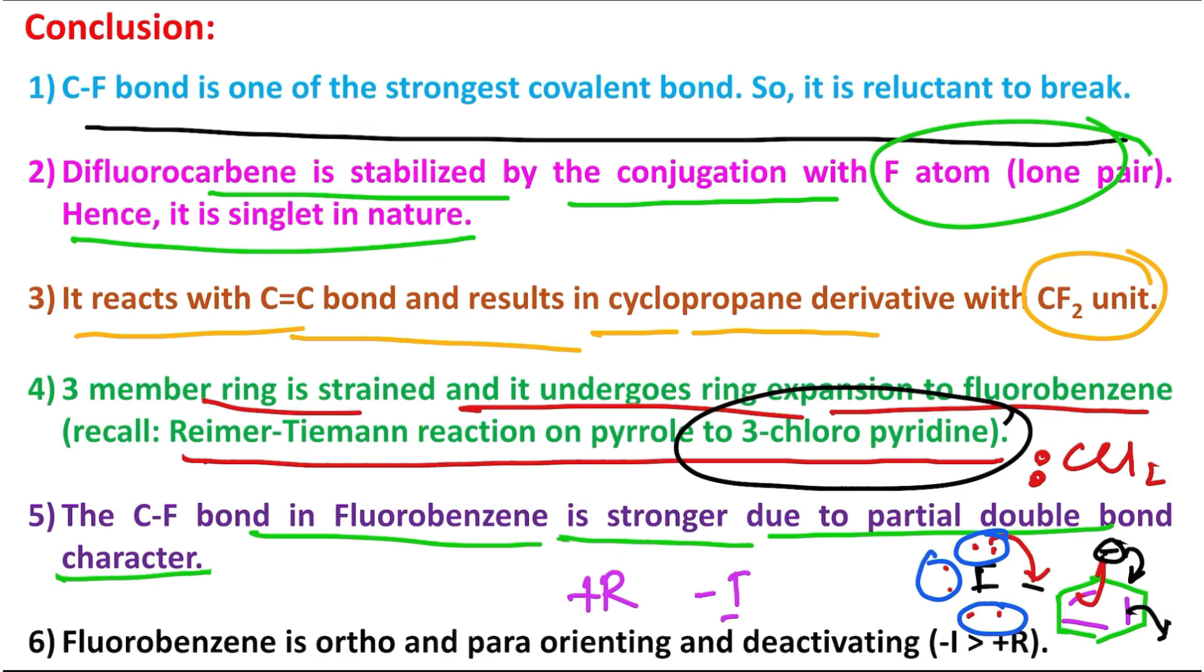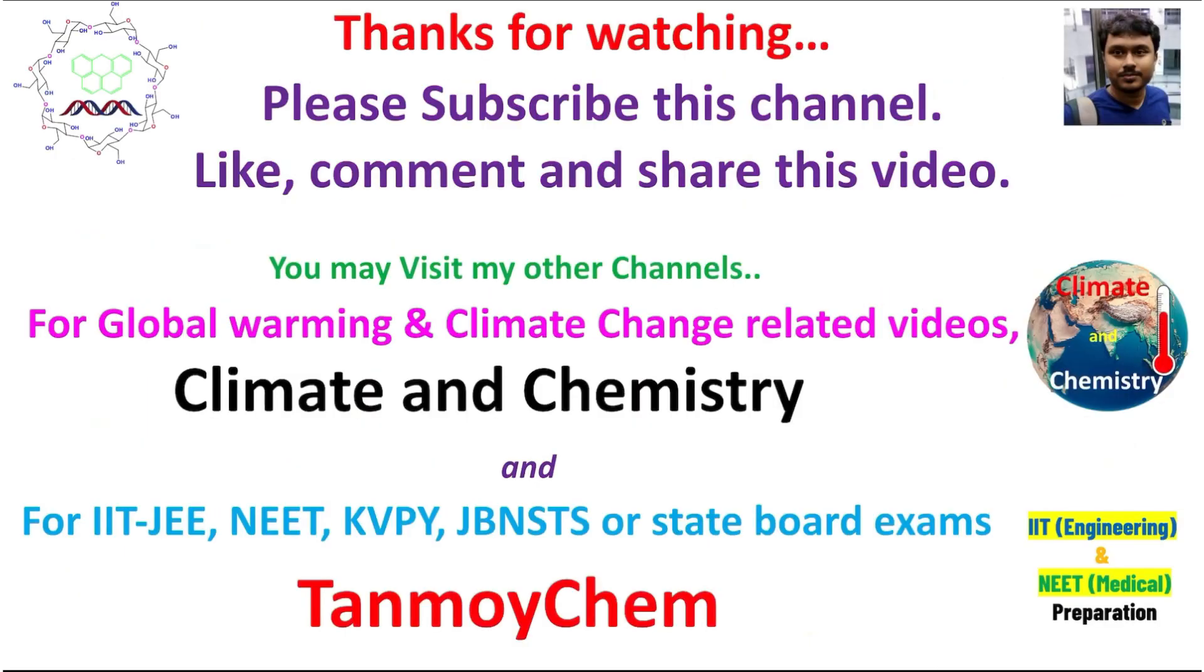And in this context, this is an exceptional case where -I is greater than +R. So fluorobenzene is ortho-para orienting but deactivating. This is a very interesting information, please remember. Now that thing I have written, fluorobenzene is ortho-para orienting and hence it's, and actually it's deactivating in nature because -I is dominating, so it withdraws more electron density from the benzene compared to how much it is donated to the benzene.